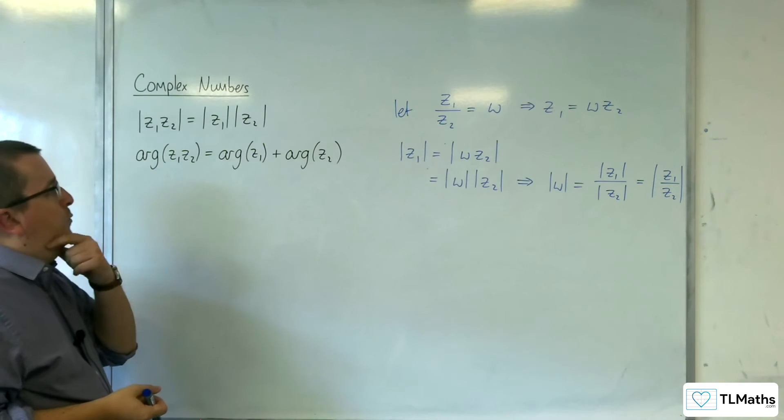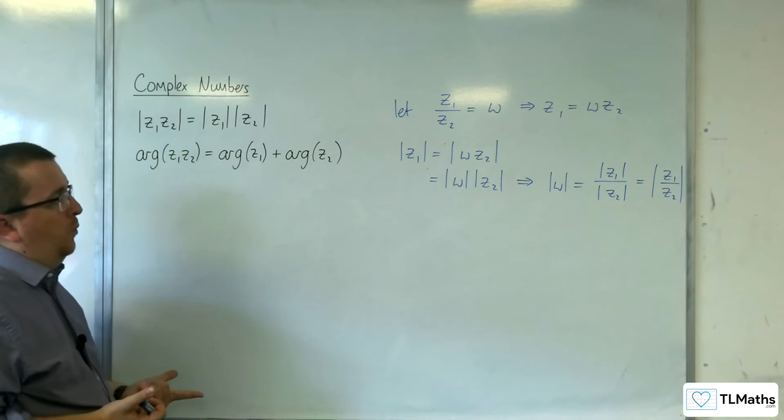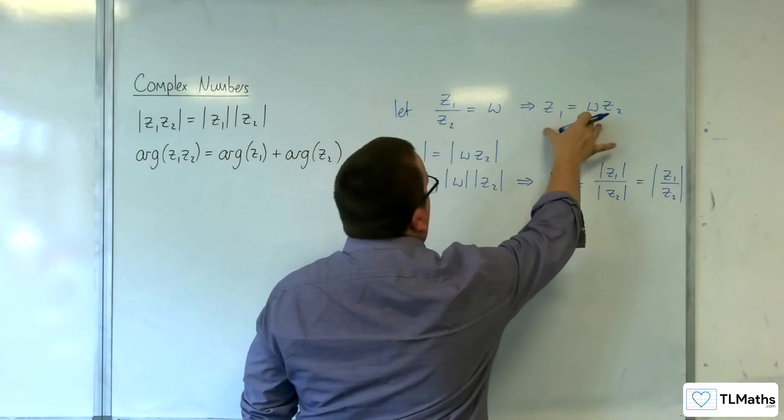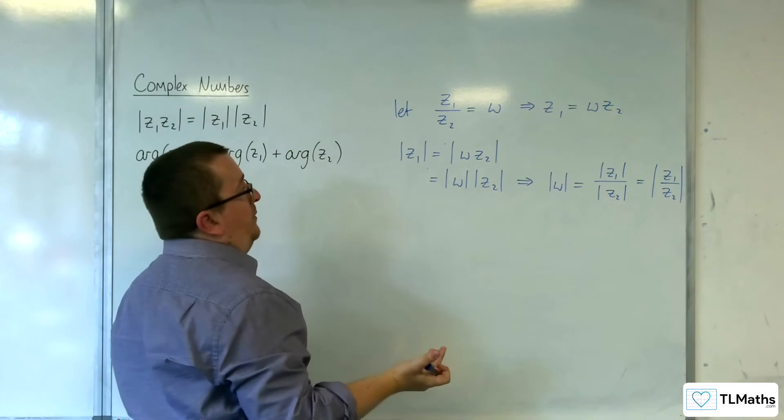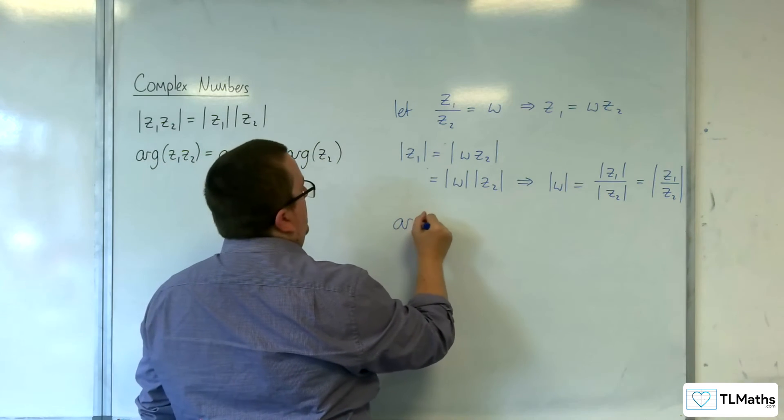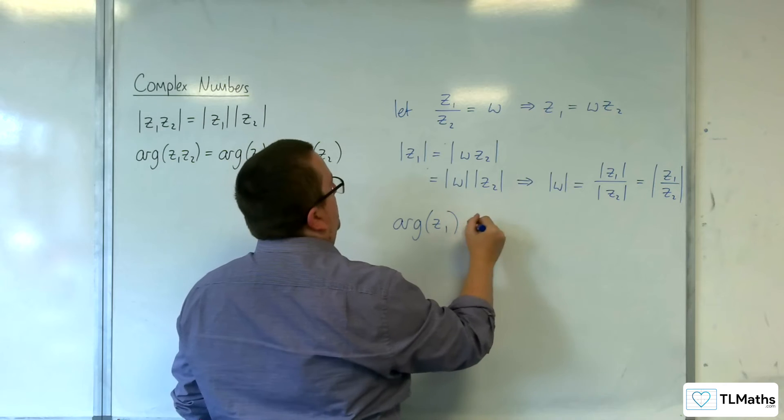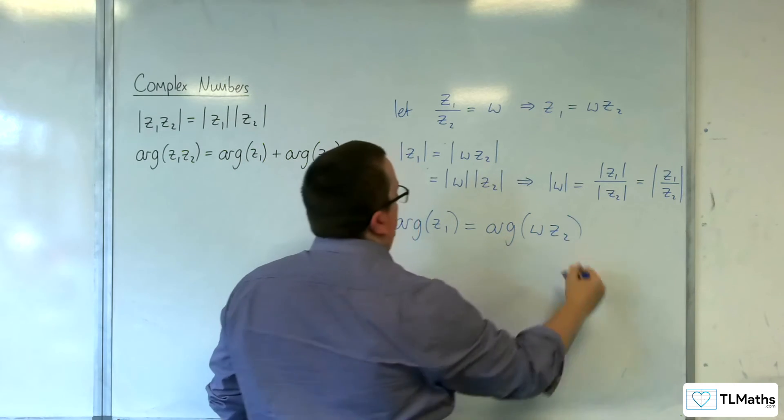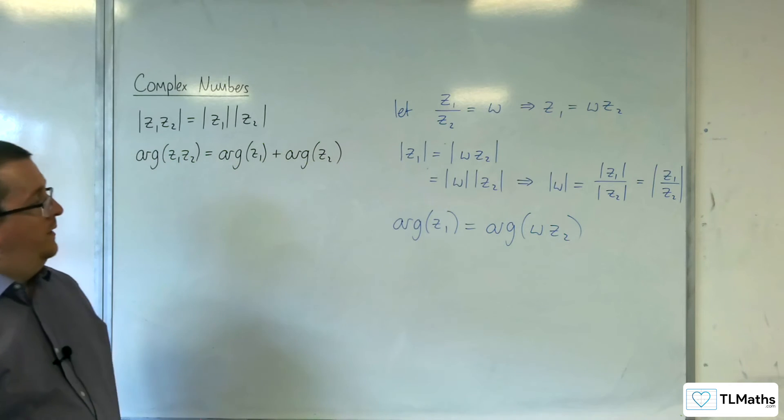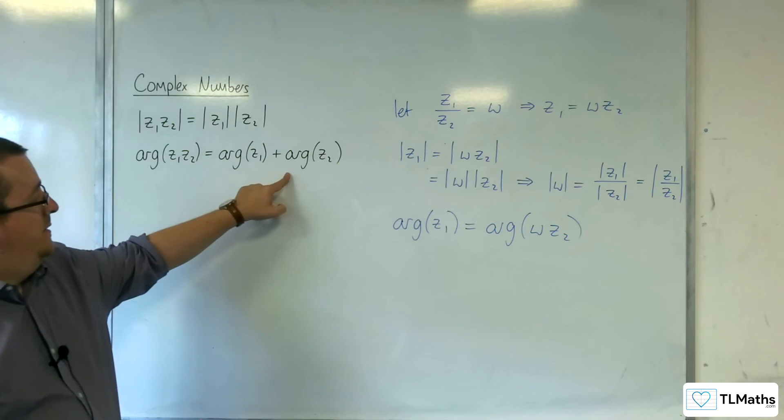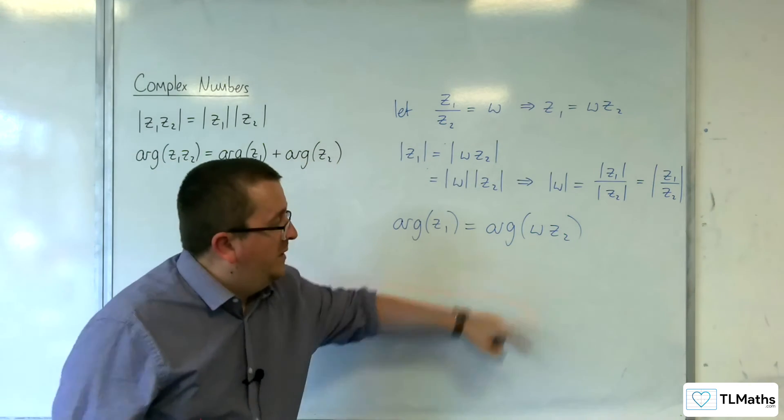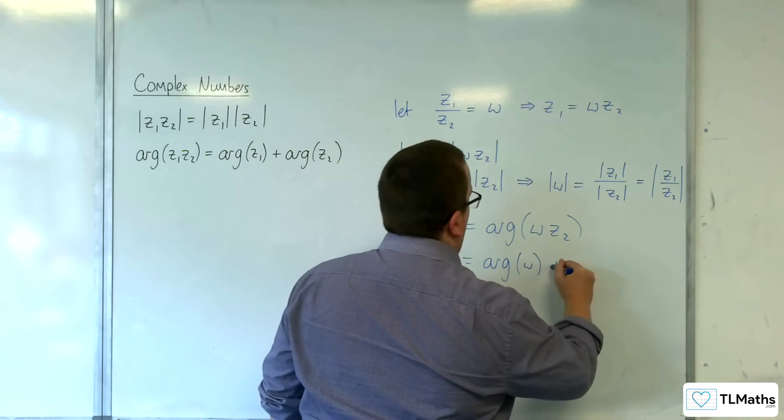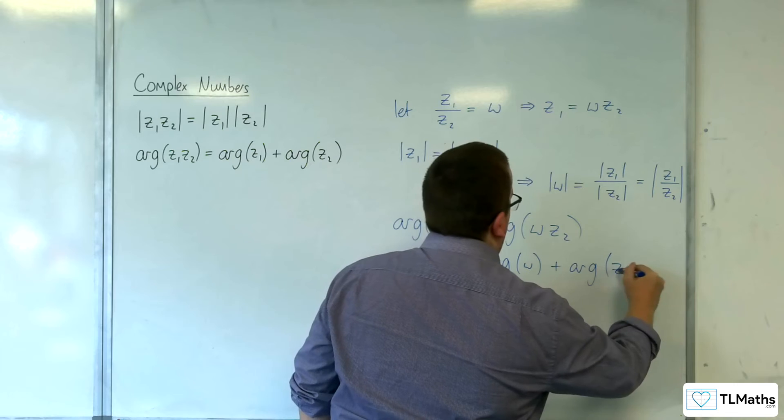Can we use a similar trick to work that out? So if we refer back up here, remember Z1 is equal to W times Z2. So the argument of Z1 must be equal to the argument of W times Z2. Now from our result here, that argument of WZ2 must be the argument of W plus the argument of Z2.